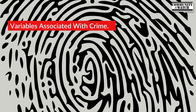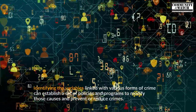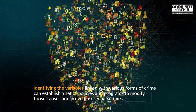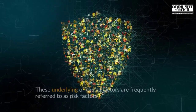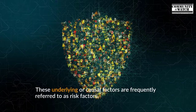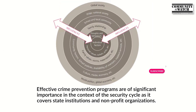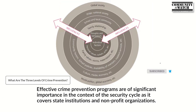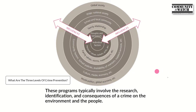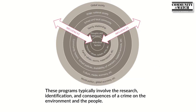Identifying the variables linked with various forms of crime can establish a set of policies and programs to modify those causes and prevent or reduce crimes. These underlying or causal factors are frequently referred to as risk factors, involving global problems and opportunities affecting socioeconomic conditions. Effective crime prevention programs are of significant importance in the security cycle, covering state institutions and non-profit organizations, and typically involve research, identification, and consequences of crime.